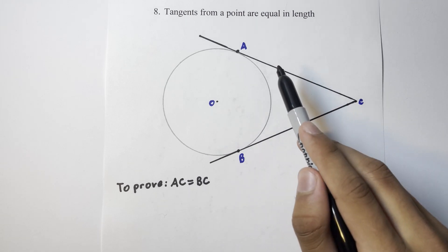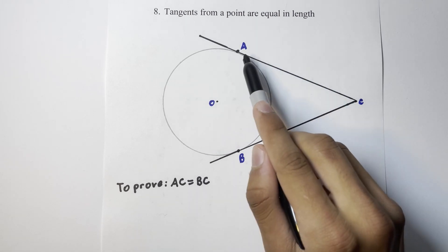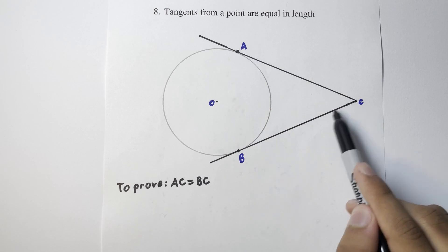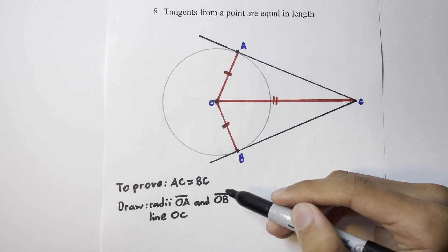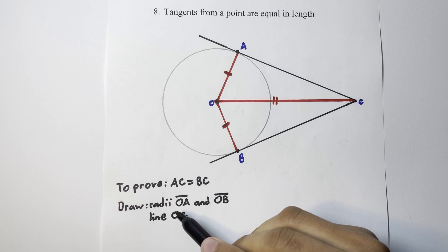However, when we say that the tangents are equal, we mean that the tangent up until point A and the tangent up until point B are equal in length. In order to prove this theorem, we first want to draw construction lines.